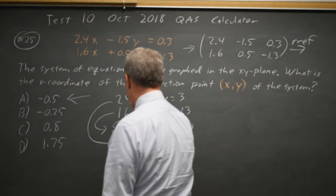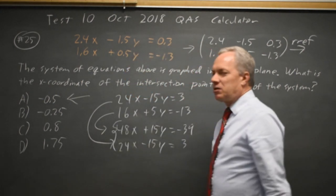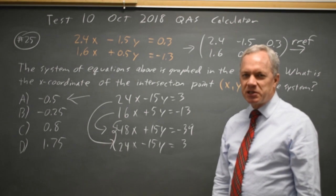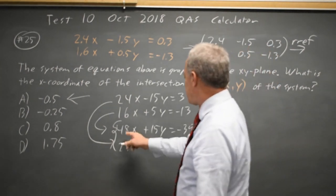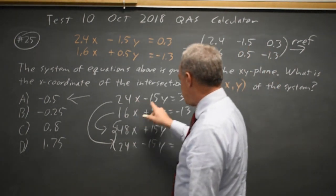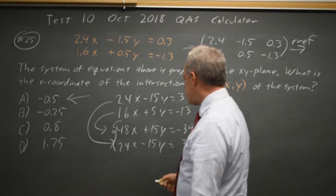Always check your clerical skills because we often get distracted. And I copied the wrong number there. This is 24x minus 15y equals 3. So I can keep going.